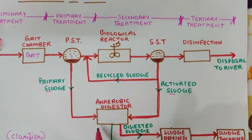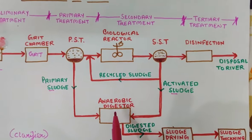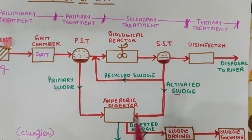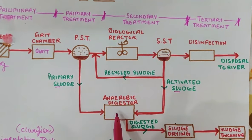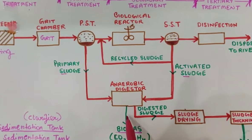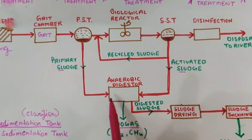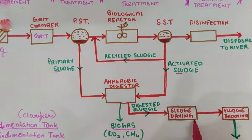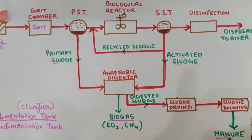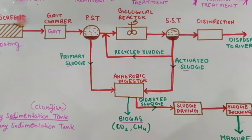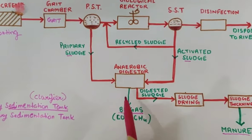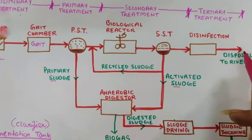All the sludge collected will go into an anaerobic digester tank, where anaerobic digestion takes place. The bacteria responsible are called methanogens — anaerobic bacteria that carry out anaerobic decomposition. The byproduct is biogas, which is a combination of CO2 and CH4. After the sludge is digested, it is dried in a drying bed, and finally used as manure in solid form. The biogas (CO2 and CH4) is released, and the treated water is discharged into a river.